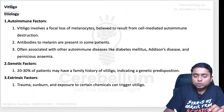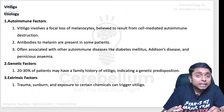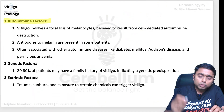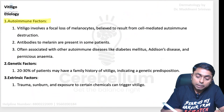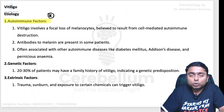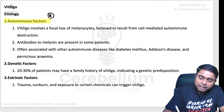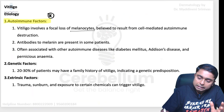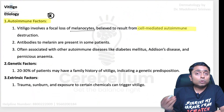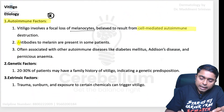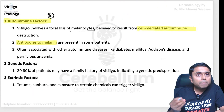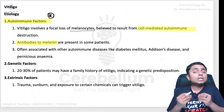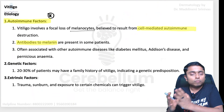Vitiligo is a condition where patients are going to have white-colored or depigmented lesions over the body. The main etiological factor responsible for vitiligo is autoimmunity — very important. Autoimmunity due to lymphocytes causing damage and destruction of the melanocytes, resulting in depigmented lesions. This is a cell-mediated autoimmune destruction of melanocytes, and there can also be autoantibodies to the melanin pigment. The melanocyte is the cell present in the stratum basale of the epidermis, which produces the melanin pigment responsible for the color of the skin.